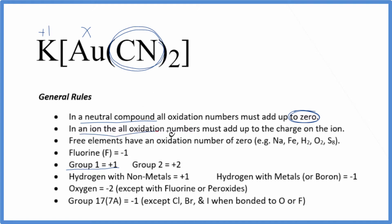When we have ions, the oxidation numbers are going to add up to the charge on the ion. So this whole thing will add up to an oxidation number of -1. Since we know everything is going to add up to zero, we can set an equation up.